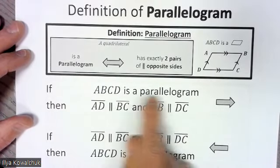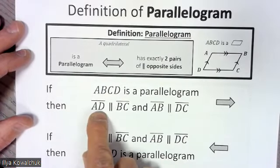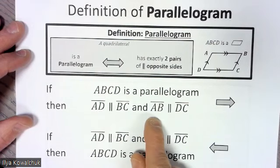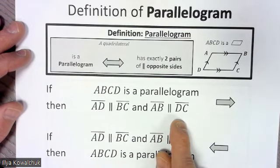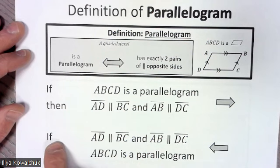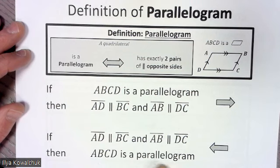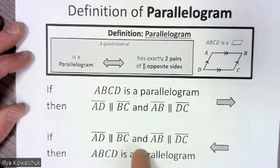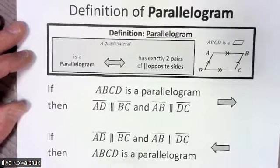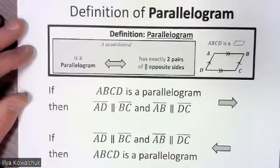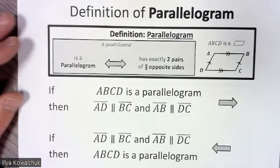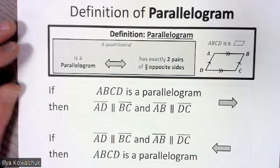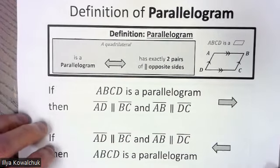We can read this two ways: if A-B-C-D is a parallelogram, then AD is parallel to BC and AB is parallel to DC. Or we could say if those two pairs of sides are parallel, then it's a parallelogram — because it's a definition, it goes both ways. These are going to be really helpful because we'll spend a lot of time proving things as parallelograms.